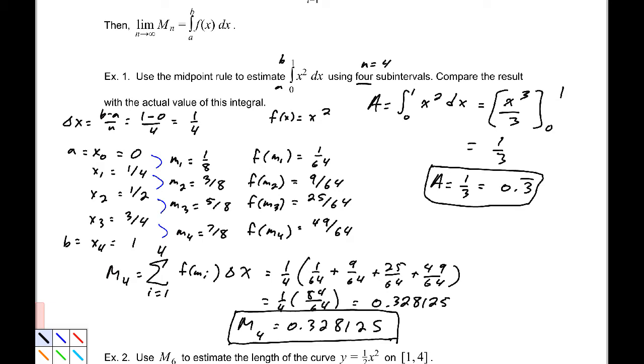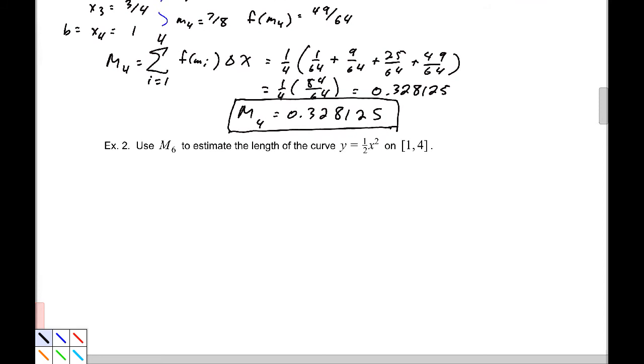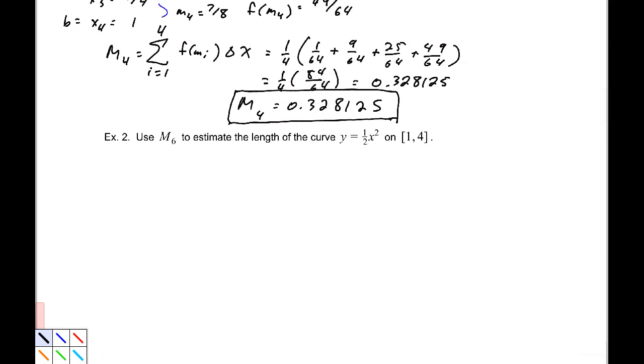Let's try another one of these. Use M6 to estimate the length of the curve y = (1/2)x^2 on the interval [1, 4]. This one will take a little bit more work because we need to first write what the length actually is. Let's go back to our applications of integrals. That is the integral from a to b of the square root of 1 + (dy/dx)^2 dx. That is just the definition, so we'll apply that.